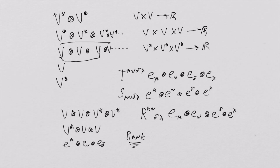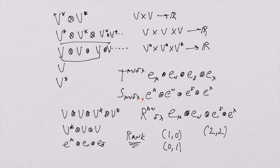The idea of rank is as follows: a vector is rank (1,0); a covector is rank (0,1). An object with two vectors followed by two covectors is rank (2,2). An object with four covectors is rank (0,4), and likewise one with four vectors is rank (4,0).